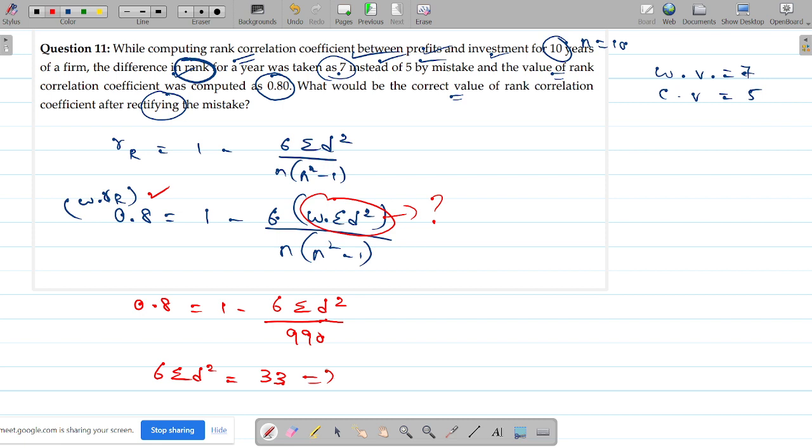I am getting 33. Check. Okay. Then what is summation d squared? Summation d squared is 33. So I have this is the wrong summation d squared. Now I have to get the correct values. Can you help me out with the correct values?